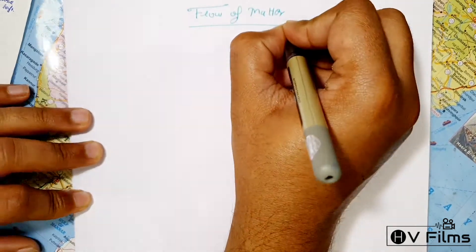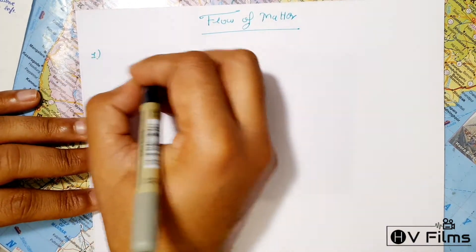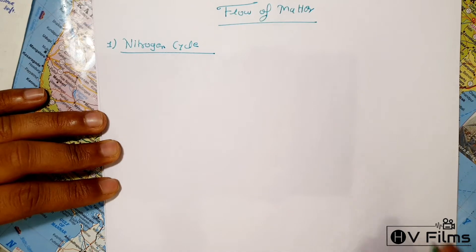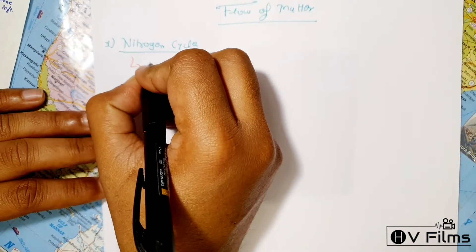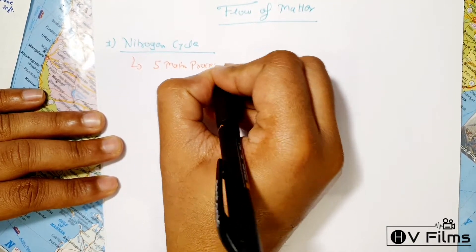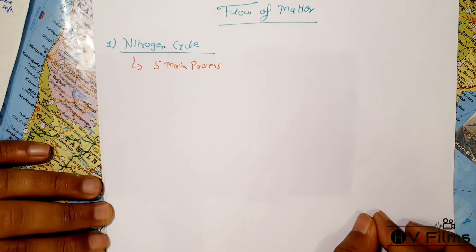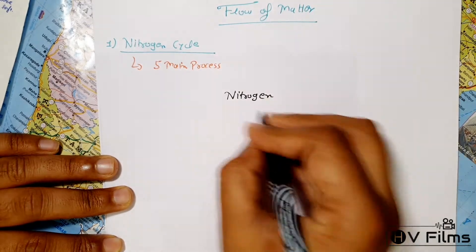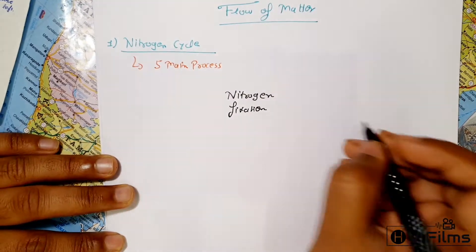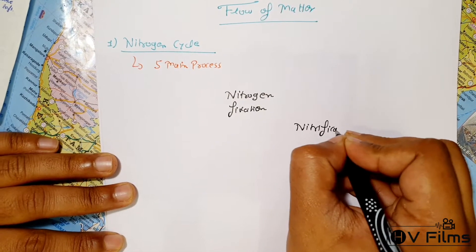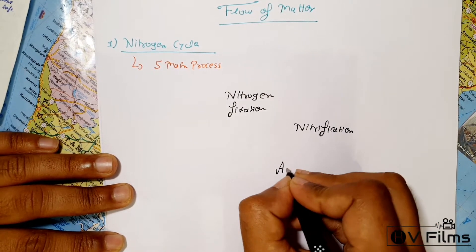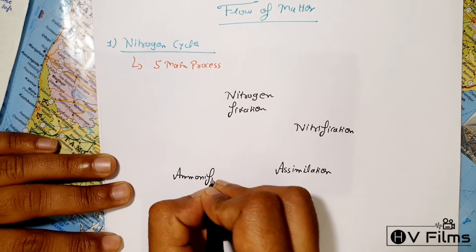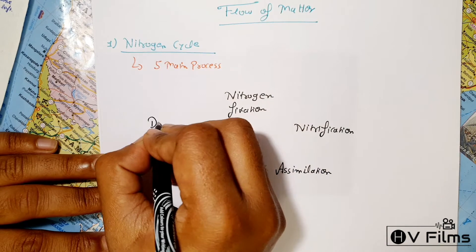The first topic in the flow of matter is the nitrogen cycle. The nitrogen cycle mainly involves five main processes: first is nitrogen fixation, then nitrification, then assimilation, then ammonification, and finally denitrification.